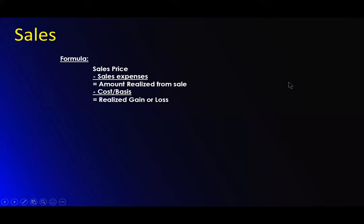Simply the sales price, whatever you have it sold for — if you're selling it for $300,000 — it's very simple, minus all the expenses, that equals your amount from the sale. By sales expenses, there's a lot of things that fall into that. We'll go into that in detail, but then you take off your cost or basis — that's what you're into the property — and then you end up with your realized gain or loss.